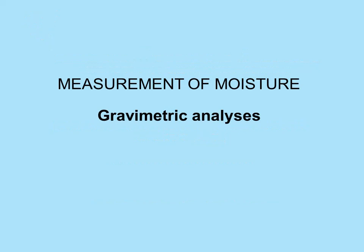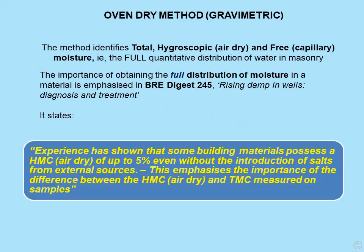Again we're dealing with masonry and we're looking at gravimetric analysis — in other words, you've got to weigh it. It is known as the oven dry method and it identifies total hygroscopic, air dry, and free or capillary moisture. That is the full quantitative distribution of water in masonry.